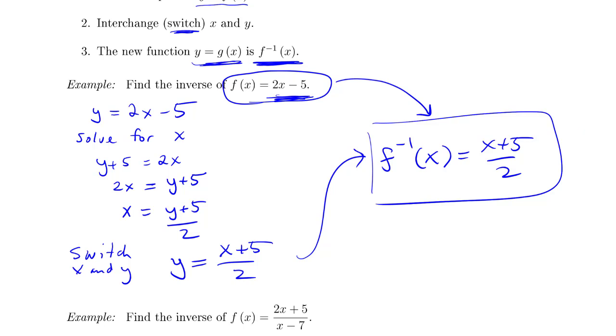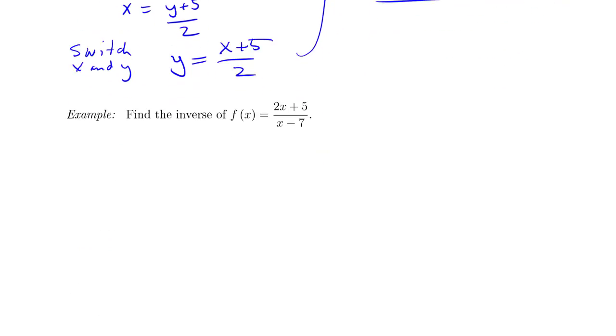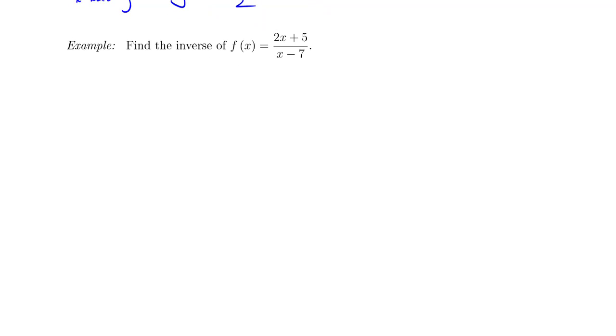Okay. So how would this work with something a little different? How about the inverse of 2x plus 5 over x minus 7? Alright. Y is 2x plus 5 over x minus 7. So first thing I'm going to do is solve for x. To do that, I have to multiply both sides by x minus 7.